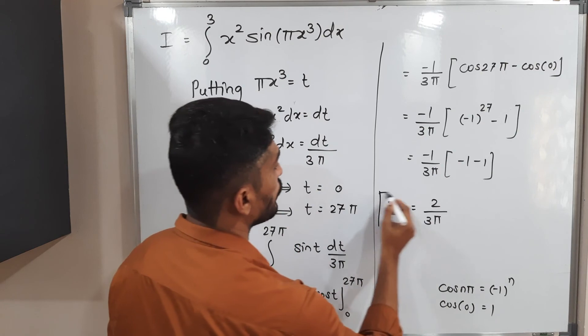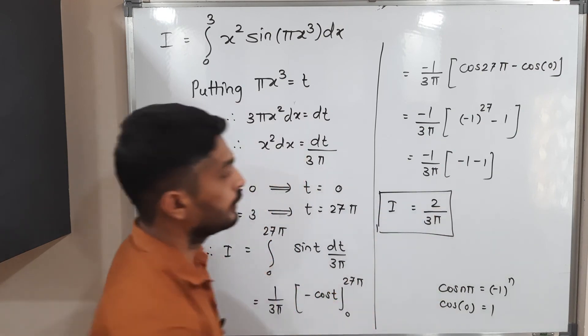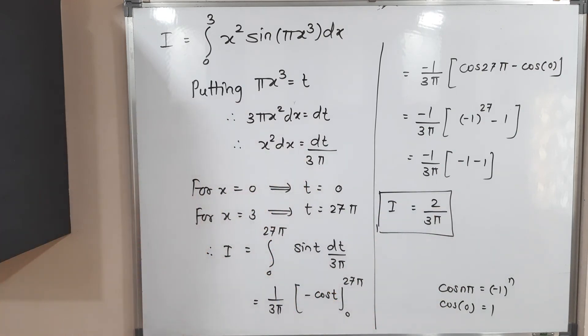So the value of the double integration is 2/(3π). We obtained this answer by changing the order of integration.